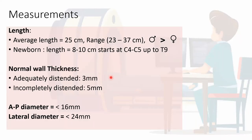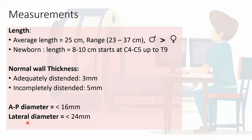Measurements of the esophagus: average length is about 25 cm, ranging from 23–37 cm, generally longer in males than females. In the newborn, its length is about 8–10 cm, starting from C4–C5 up to T9. Normal wall thickness when adequately distended is about 3 mm; when incompletely distended about 5 mm; AP diameter less than 16 mm, lateral diameter less than 24 mm.